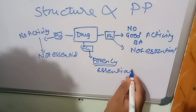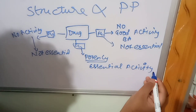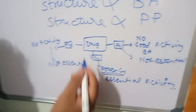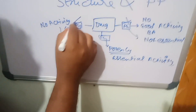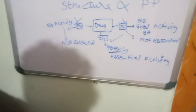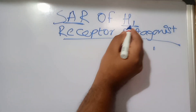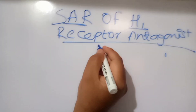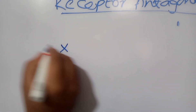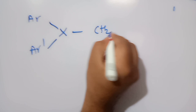Since functional group 2 is showing potency — very good activity — it is essential for activity. This activity may be against cancer, HIV, tuberculosis, or any other condition. We will analyze based upon the structural activity relationship. So we can tell: functional group 1 is not essential, functional group 3 is not essential, only functional group 2 is essential for activity. Now let us discuss structural activity relationship in relation to H1 receptor antagonist.